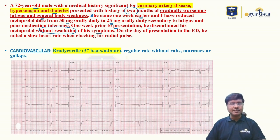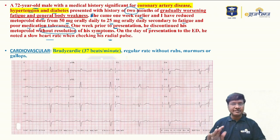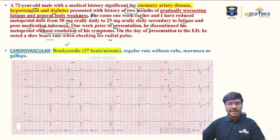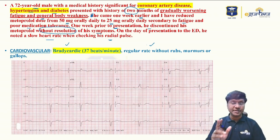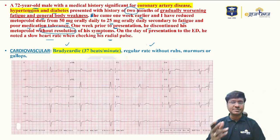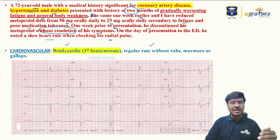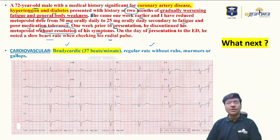When he came to me, he was noted to have a heart rate of only 37 per minute with a feeble pulse. Cardiovascular examination showed bradycardia at 37 beats per minute. On examination the rate appeared regular, but the ECG was showing an irregular rhythm. There was no rub, no murmur, and no gallop. When he came to the emergency department, the ECG looked like this.